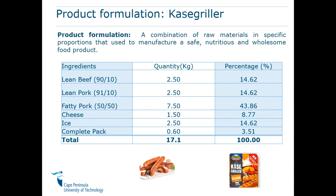In this example we see that this is a product formulation for case griller — also called a gas griller or cheese griller. You normally find them as a side at Debonese with pizza. The ingredients being used are lean beef at 90%, lean pork at 90-10, fatty pork at 50-50, and then we've also got cheese, ice, and complete peg — which could be a spice peg. We have the quantities in kilograms.